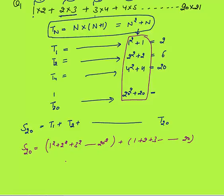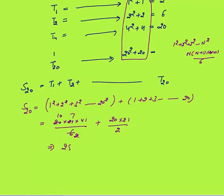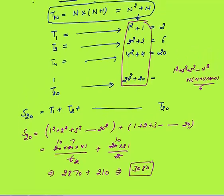The sum of squares formula is 1² + 2² + ... + n² = n(n+1)(2n+1)/6. For n=20, this is 20×21×41/6 = 2870. The sum of first n natural numbers is n(n+1)/2. For n=20, this is 20×21/2 = 210. So the final answer is 2870 + 210 = 3080.